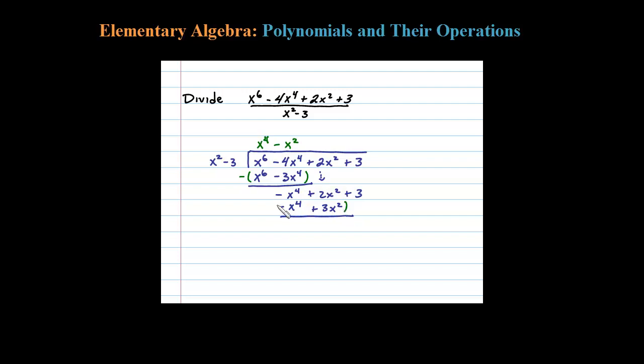After which you subtract, and when you subtract a negative number you're really adding. So negative X to the fourth plus X to the fourth is 0. 2X squared minus 3X squared is negative X squared. Bring down the next term.